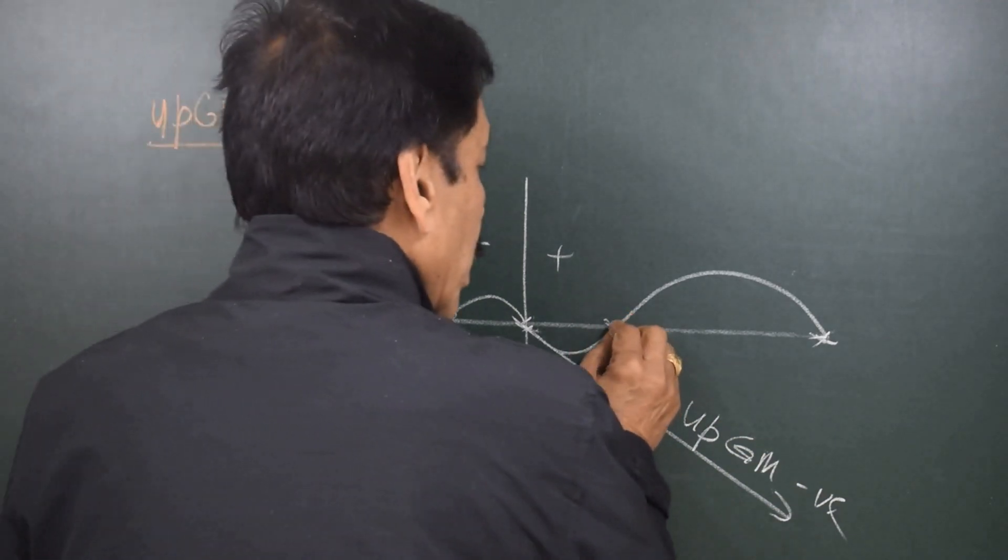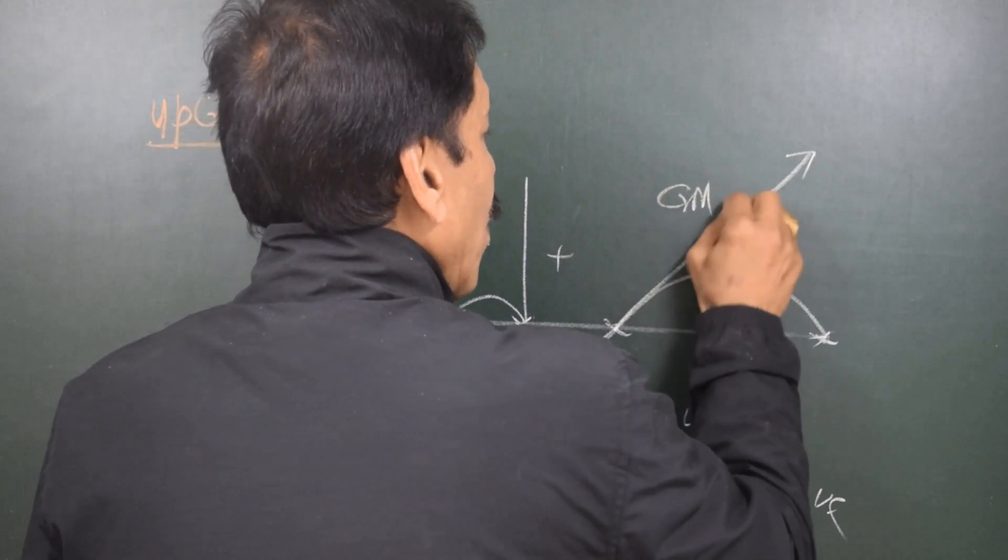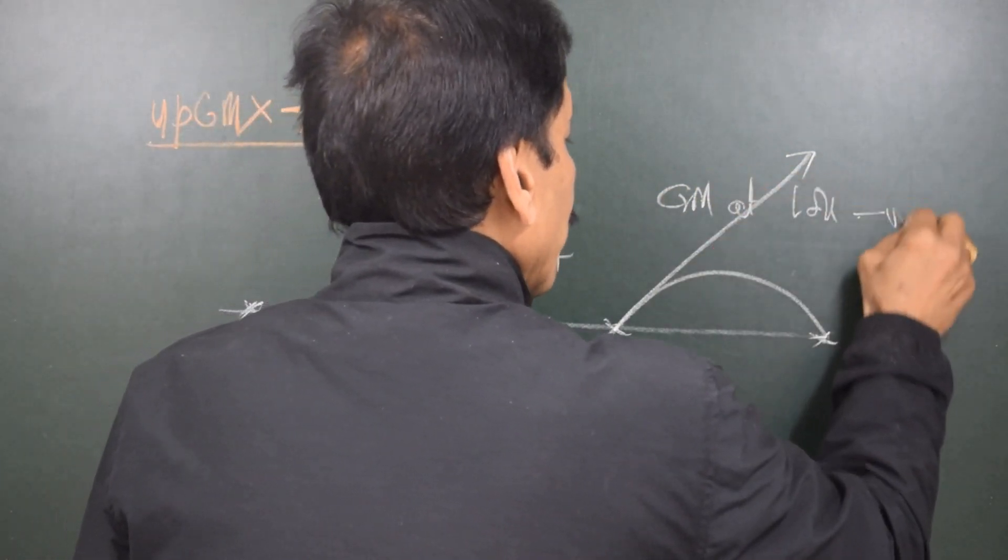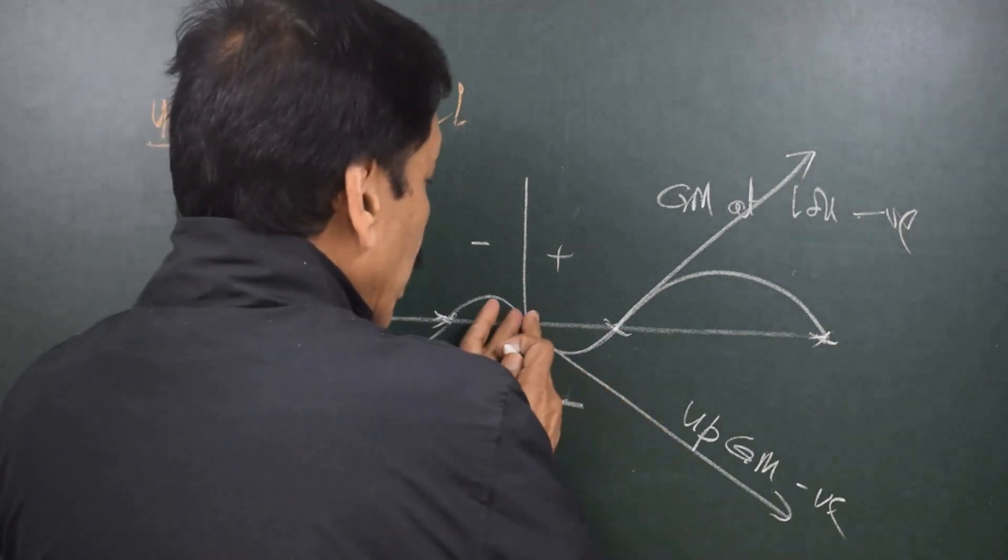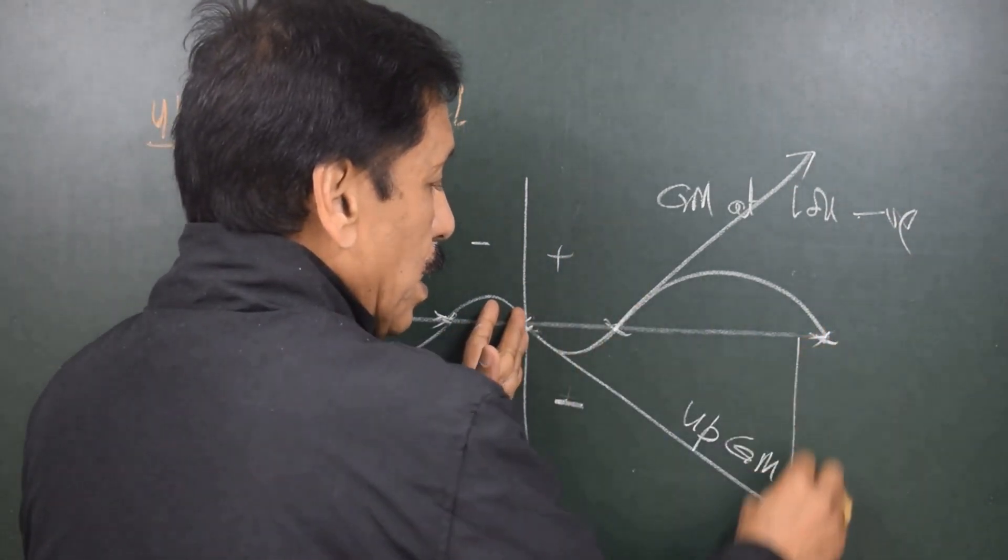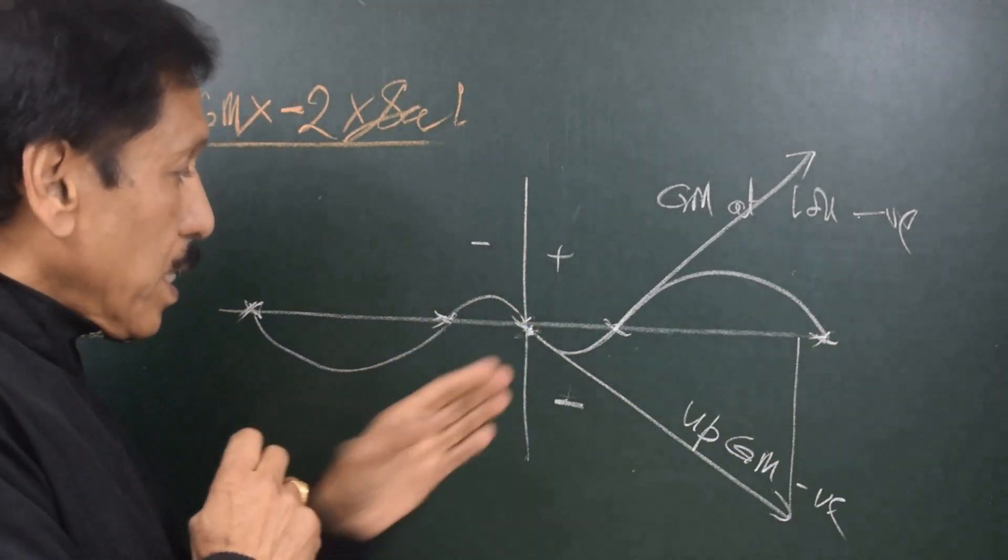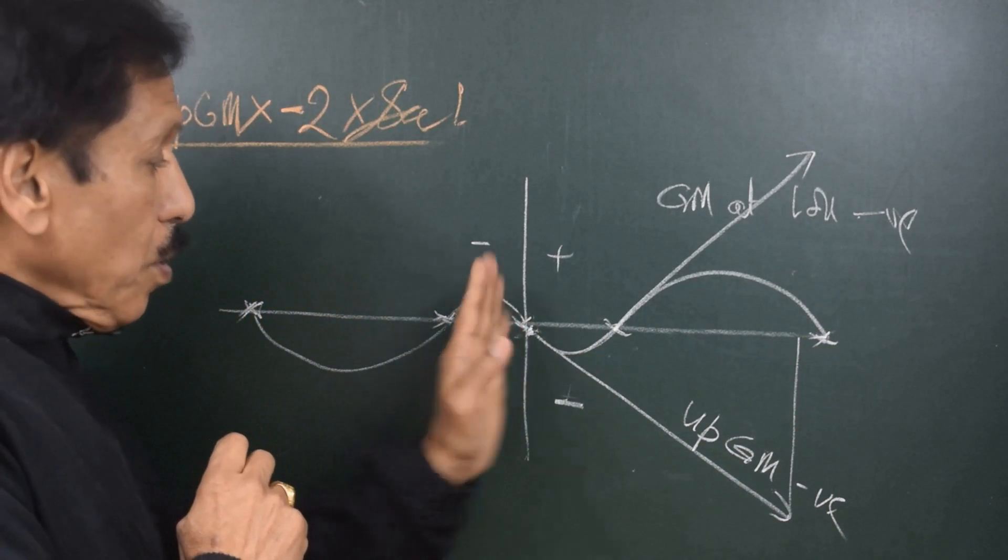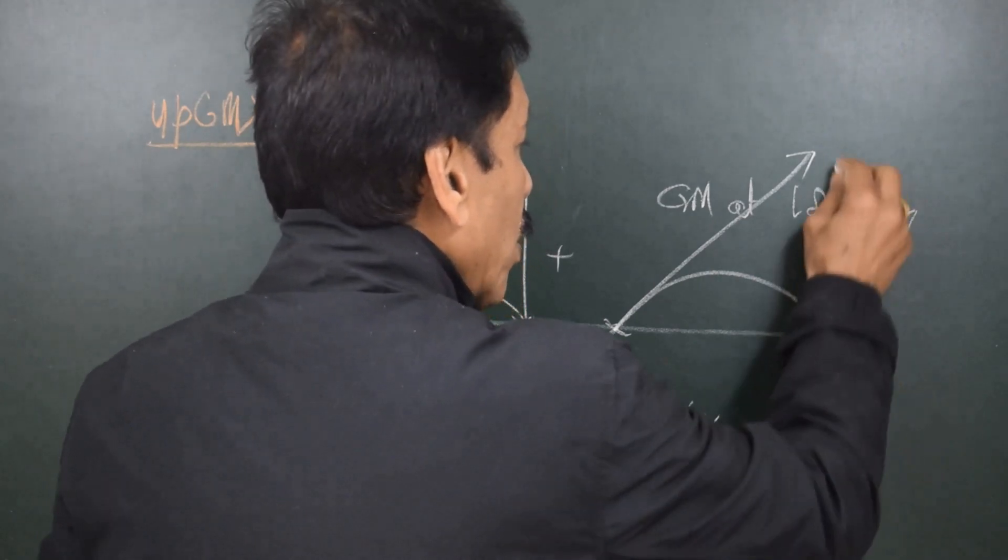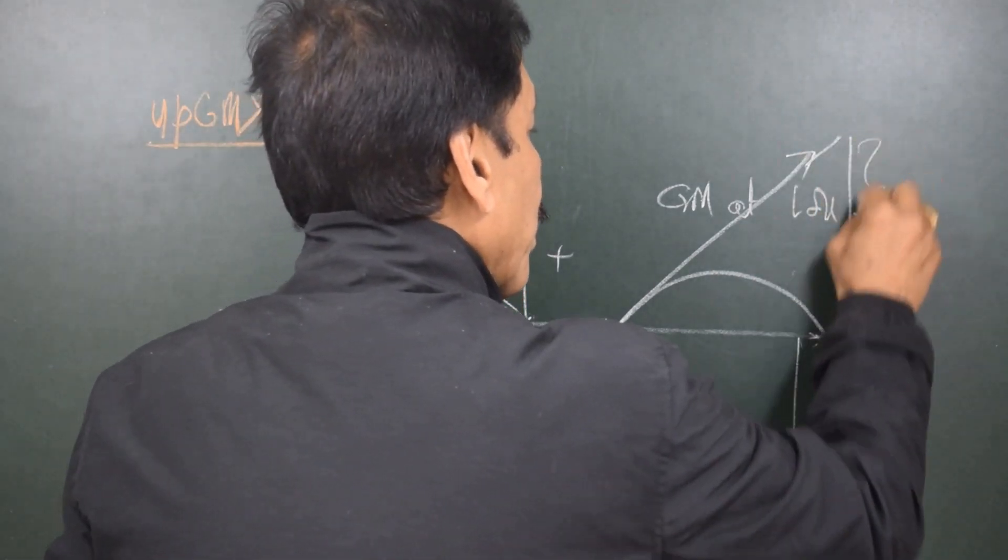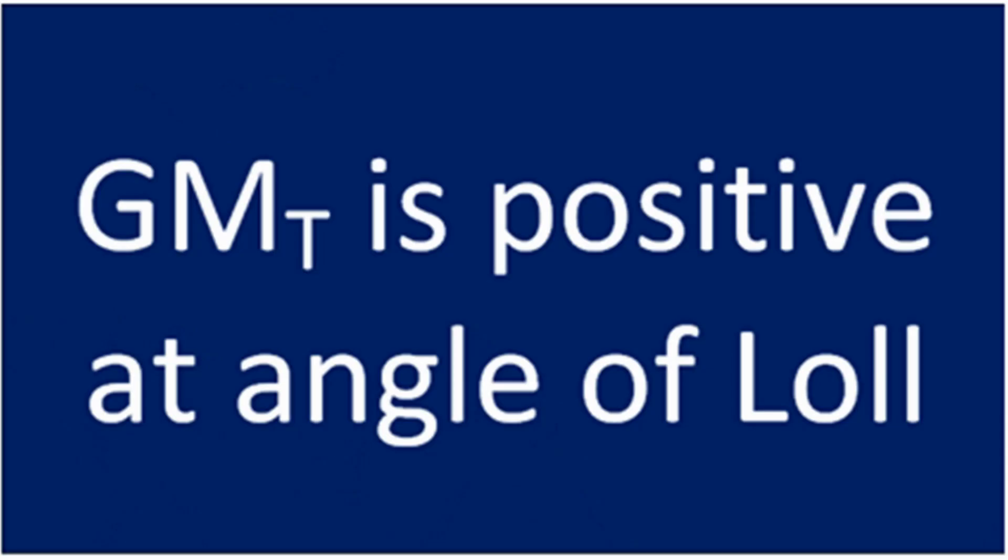A lot of things about angle of loll you can remember from the diagram itself. Here the curve goes in upward direction, we can say that the GM at angle of loll is positive, and the value can be read. The value of the GM can be read when you measure at a distance of 57.3 degrees from the point where you are putting tangent on the graph. You measure the height at 57.3 degrees, you will get the negative GM or positive GM can be read—57.3 degrees from the point of tangency.